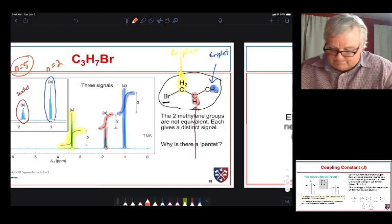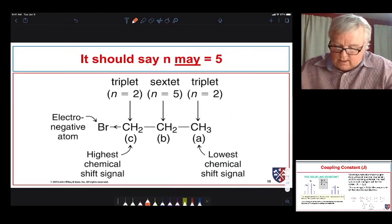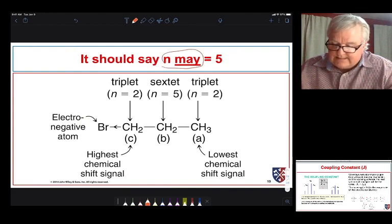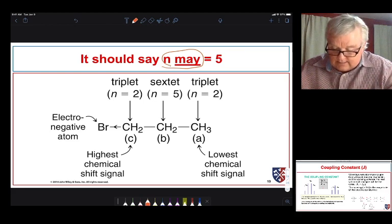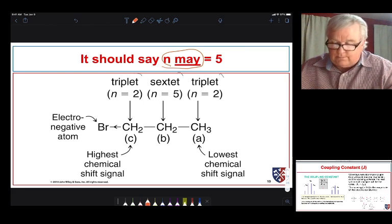This n equals 5 because those coupling constants are close enough that we get simple coupling and we see a nice pattern. So, your n may be simple if the coupling constants are close and this is, as it turns out, this is the case. So, we see a nice triplet, sextet, and another triplet.